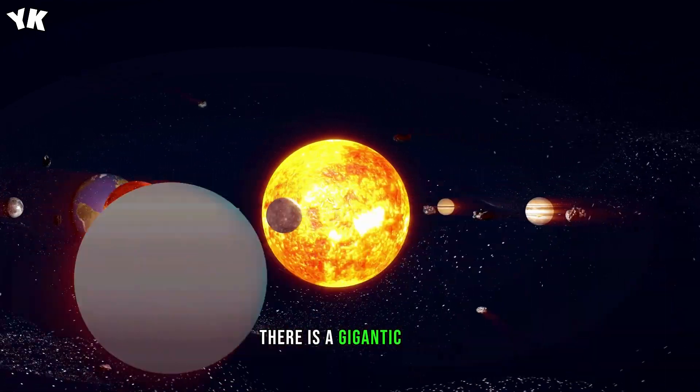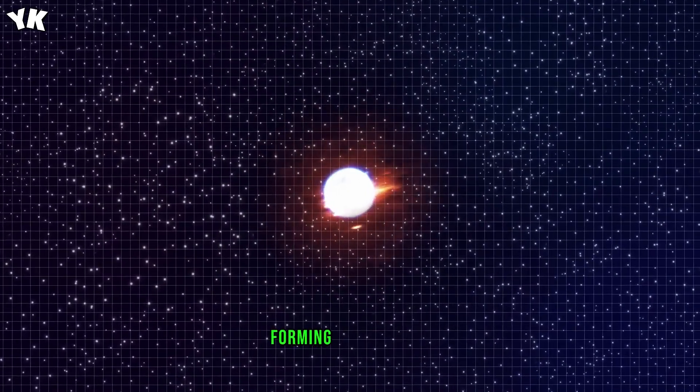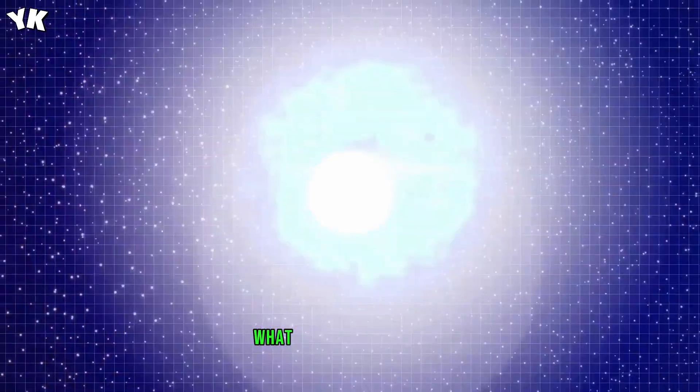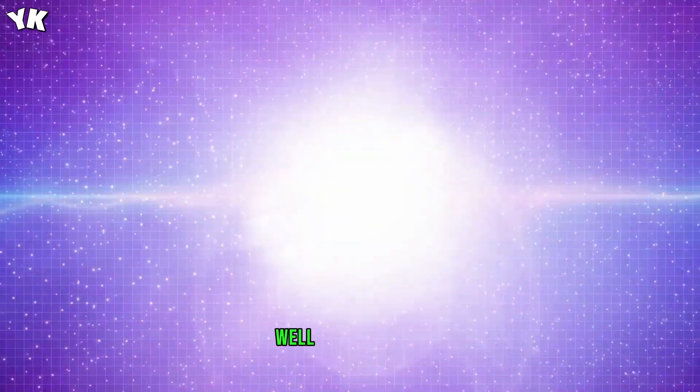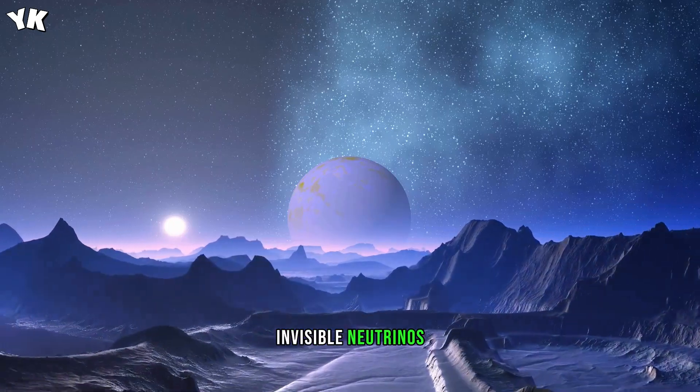Imagine that there is a gigantic star ten times larger than our sun that would explode, forming a supernova only a mere 25 light-years away from our poor Earth. What would happen to us? Well, the explosion will trigger a blast of fast-moving invisible neutrinos towards our planet.